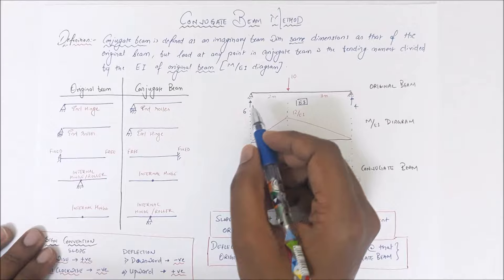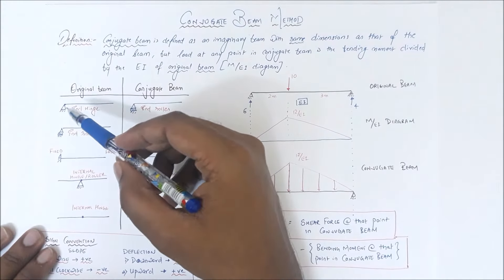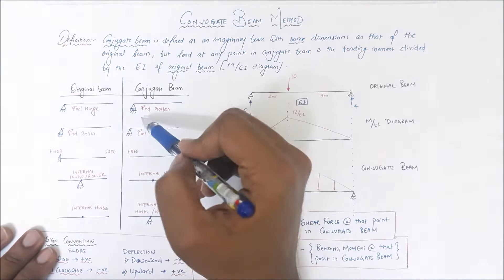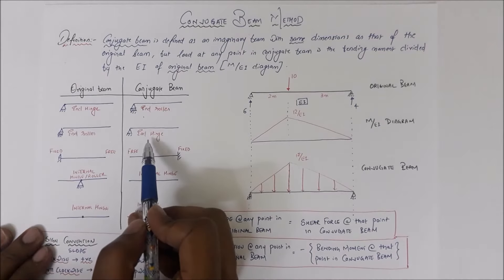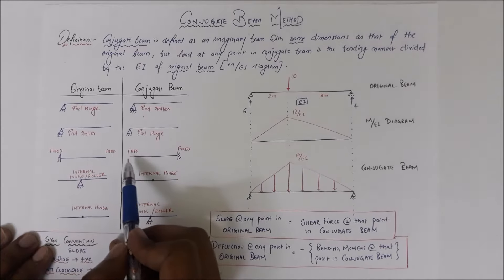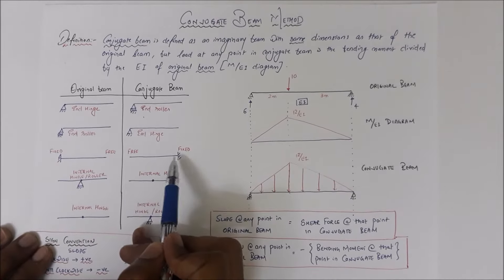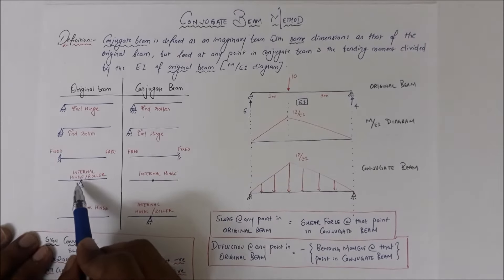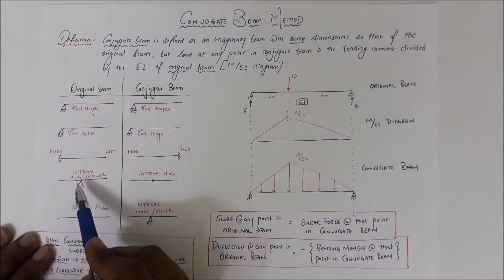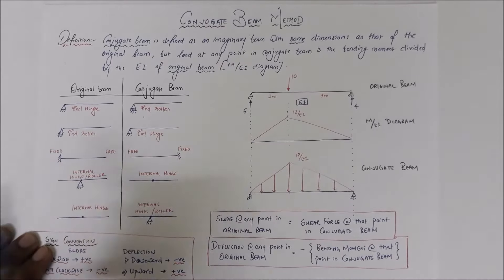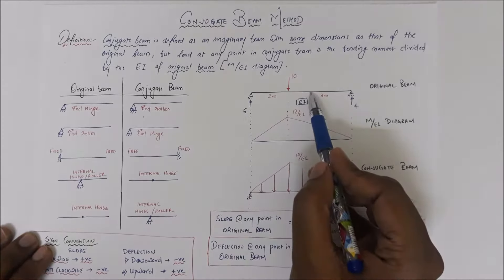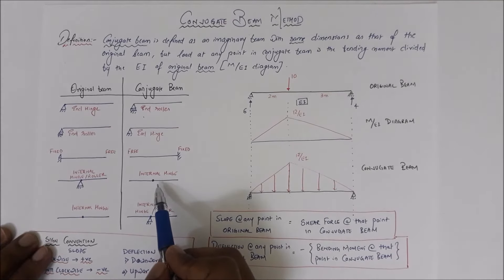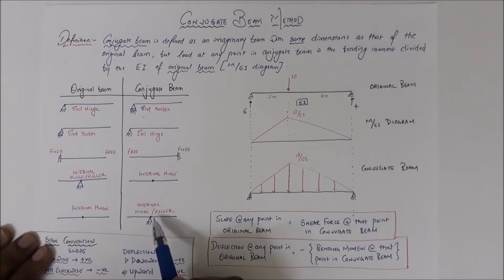The relationship between supports in the original and conjugate beam is: an end hinge becomes an end roller, an end roller becomes an end hinge, a fixed support becomes a free support, and a free support becomes a fixed support. An internal or intermediate hinge in the original beam becomes an internal roller or hinge in the conjugate beam. Note that end hinge and intermediate hinge are different — end hinge is at the end of the beam, while an intermediate hinge is somewhere in between.